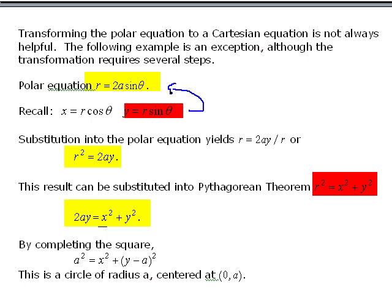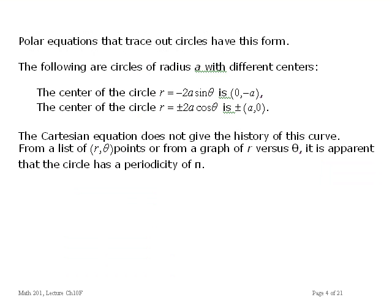At this point, we can use the Pythagorean theorem: r squared equals x squared plus y squared, substituting for r. We now have an equation with no r and no theta, just x's and y's. In the next step, we complete the square on y. Here is the result: a squared equals x squared plus (y minus a) squared. This is a circle of radius a centered at the point x equals 0, y equals a.